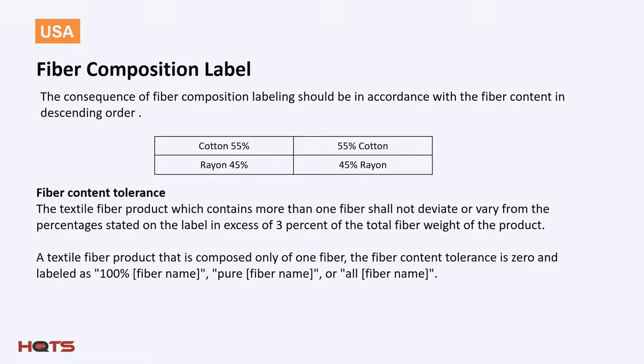The sequence of fiber composition listed on the label should be in descending order. For example, for a product that contains 55% cotton and 45% rayon, it should be labeled as cotton 55%, rayon 45% — or equivalently, 55% cotton, 45% rayon, since the word order of the material and percentage on the same line is not important. The actual fiber percentage listed may not deviate from the percentages on the label by more than 3% of the total fiber weight. Using cotton as an example, if the label indicates cotton is present at 40% by weight, the actual tested amount may vary from 37% to 43%.